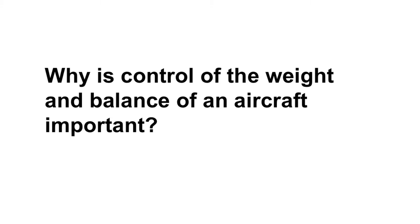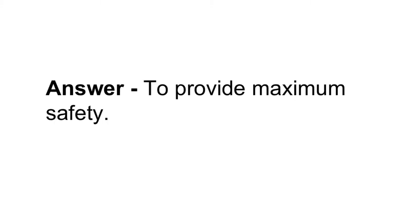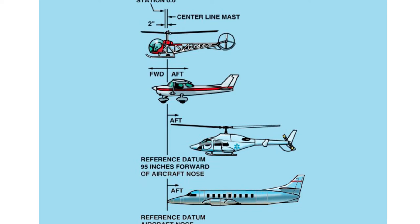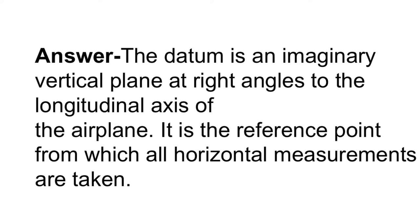Why is control of the weight and balance of an aircraft important to provide maximum safety? What is the datum of an aircraft and what is its function? The datum is an imaginary vertical plane at right angles to the longitudinal axis of the airplane. It is the reference point from which all horizontal measurements are taken.